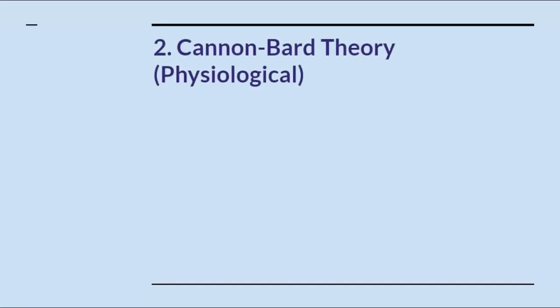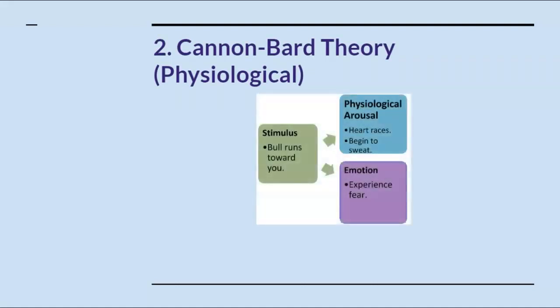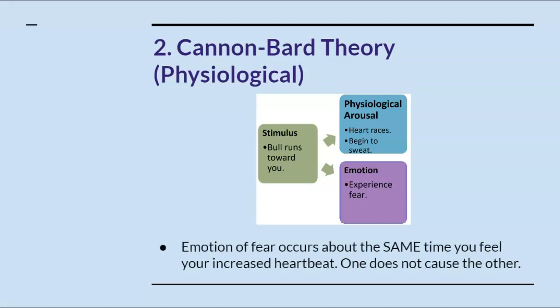The second theory is the Cannon-Bard theory. This theory also hypothesizes that emotions happen so quickly, but in this case physiological arousal, or physical symptoms, happen at the same time as the emotion — one does not cause the other. This theory may explain how the facial feedback hypothesis allows you to feel the emotion at the same time that you're mimicking the muscle movements of that same emotion.